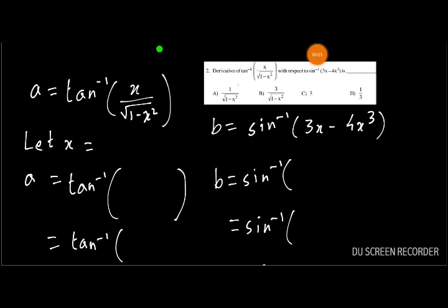Question 2: find the derivative of tan⁻¹(x / √(1 - x²)) with respect to sin⁻¹(3x - 4x³). This is a derivative question. We consider two functions: A = tan⁻¹(x / √(1 - x²)) and B = sin⁻¹(3x - 4x³). Both functions are given in x, so we use a parametric approach.